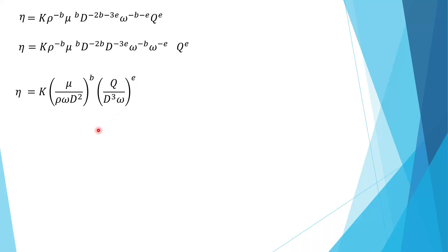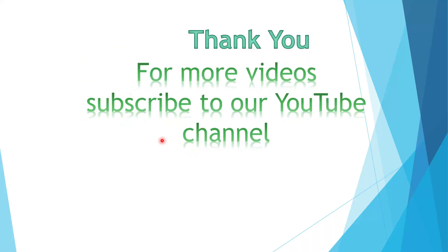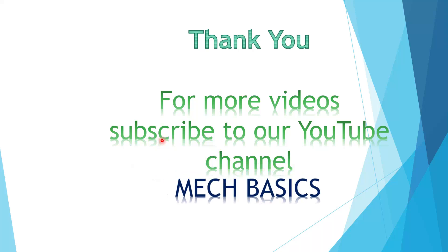This is the final answer using Rayleigh's method. The final expression is: efficiency = K · φ(μ / ρωD², Q / D³ω). Thank you. For more videos you can subscribe to our YouTube channel, Make Basics.